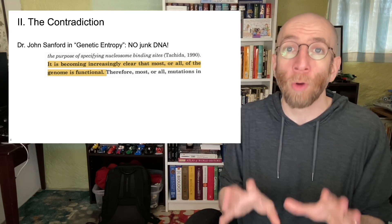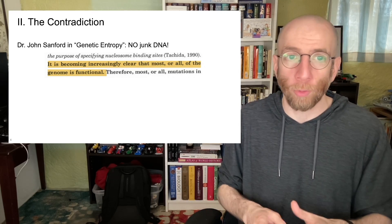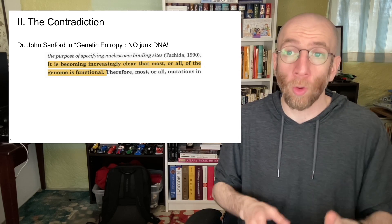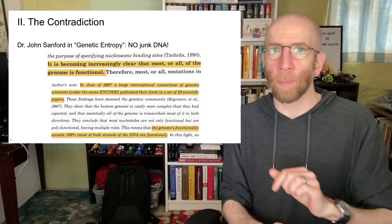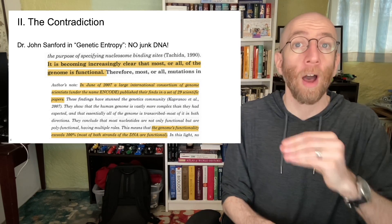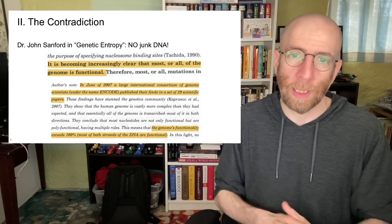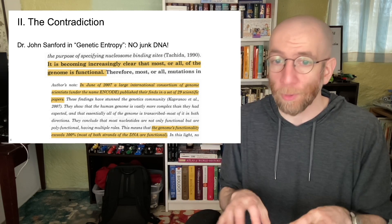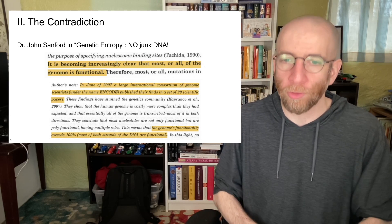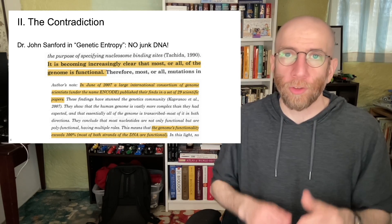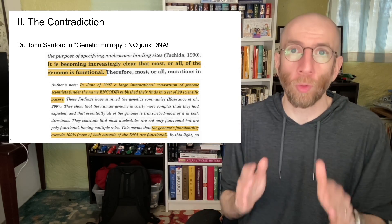Starting with the idea that there's no junk DNA in the human genome, in his book Genetic Entropy and the Mystery of the Genome, Sanford writes: "It is becoming increasingly clear that most or all of the genome is functional." In a later edition — I believe the third edition — he updates it with early findings from the ENCODE project, discussing papers released in 2007, saying: "This means that the genome's functionality exceeds 100%. Most of both strands of the DNA are functional." So the message from Sanford is that the genome is close to 100% functional.